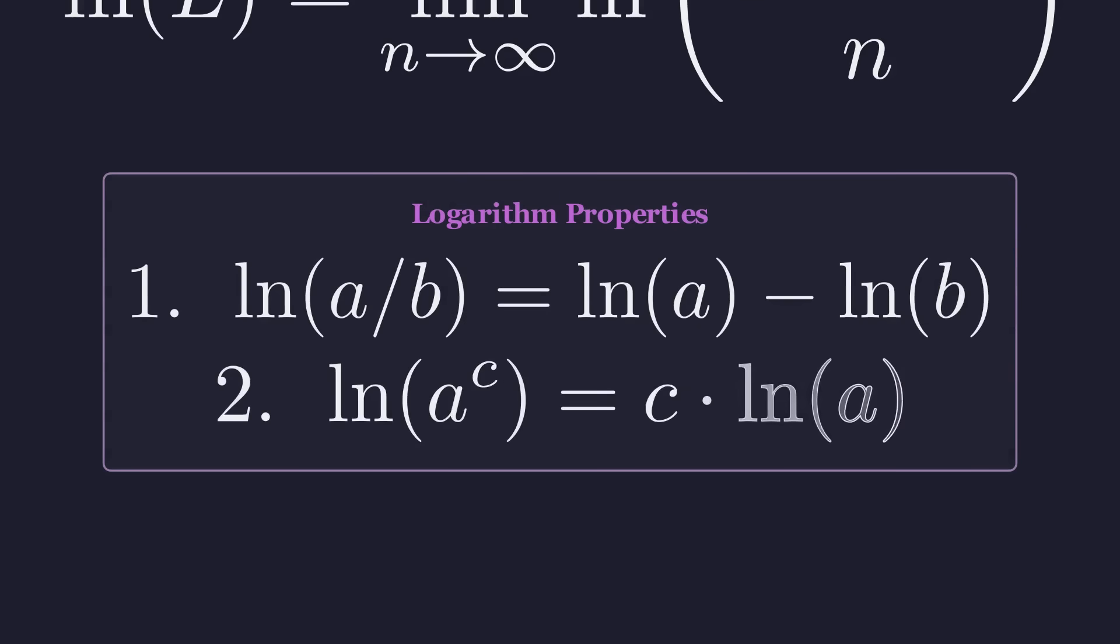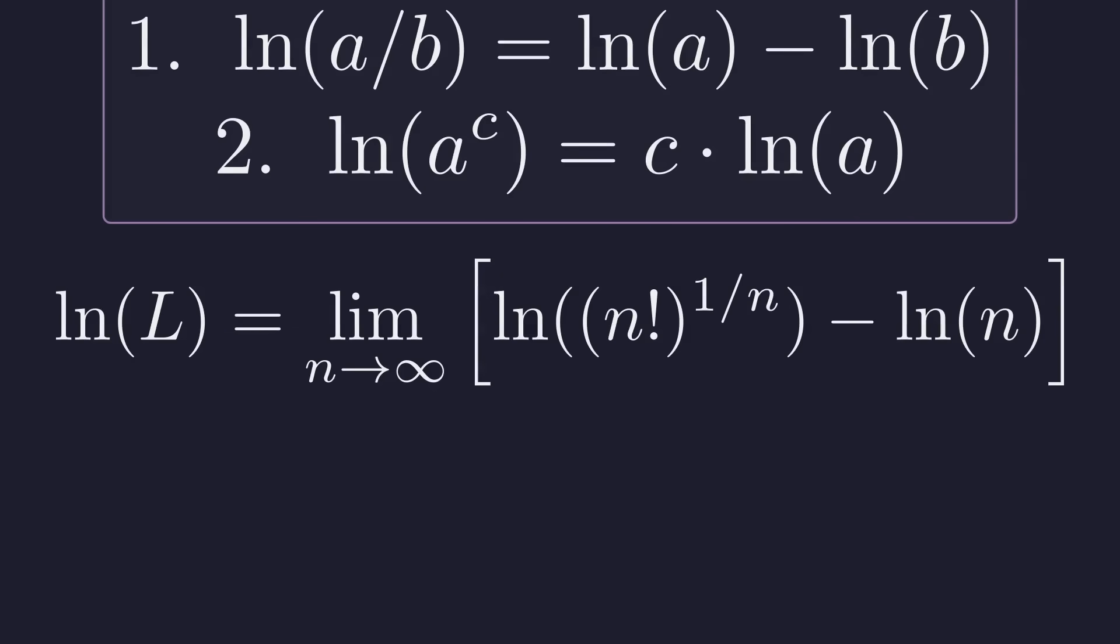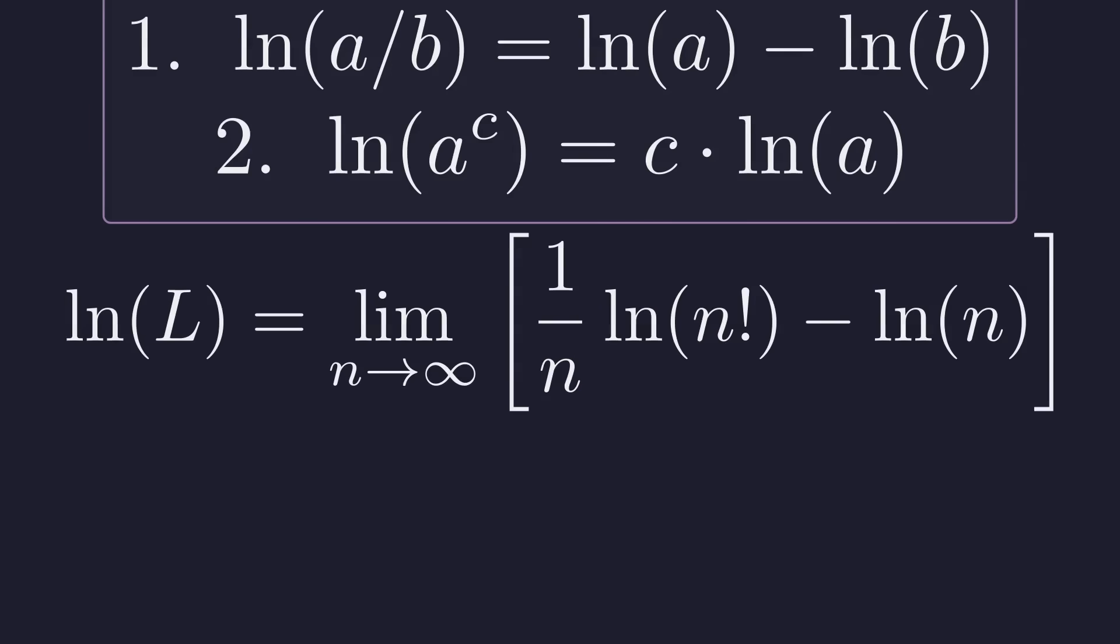We'll now apply two key logarithm properties. First, the log of a quotient becomes the difference of the logs. Second, the log of a power lets us bring the exponent down in front. Let's apply the quotient rule to the term inside our limit. This separates the expression into the difference of two logarithms. Next, we apply the power rule to bring the 1 over n exponent down. The expression now simplifies to 1 over n times the natural log of n factorial minus the natural log of n.